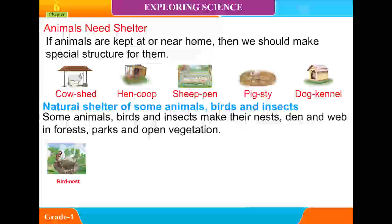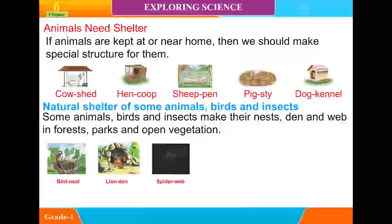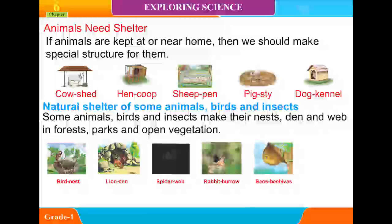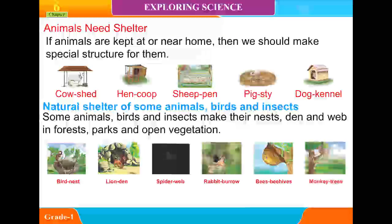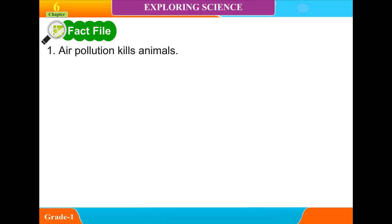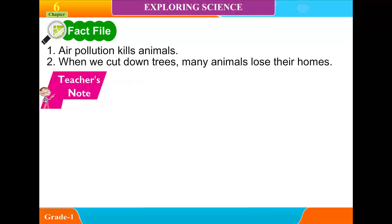Natural shelters include a bird's nest, lion's den, spider's web, rabbit's burrow, bees' beehives, and monkeys living in trees. Fact: Air pollution kills animals. When trees are cut down, many animals lose their homes.